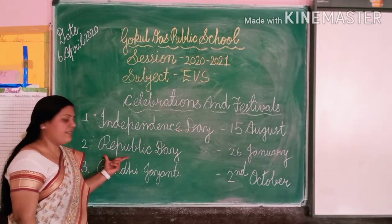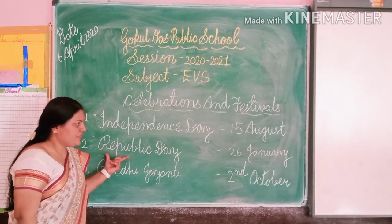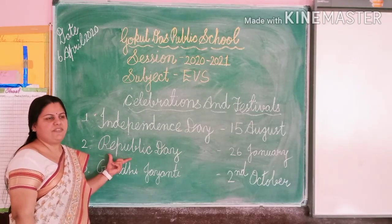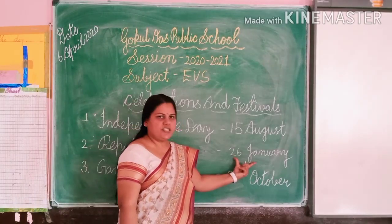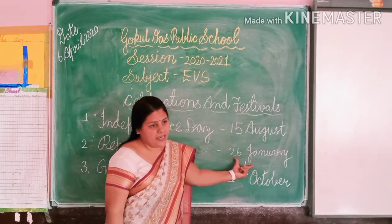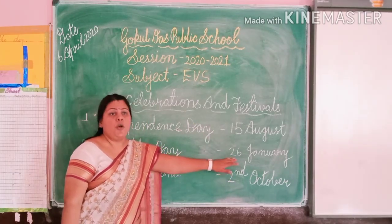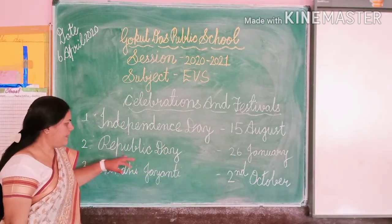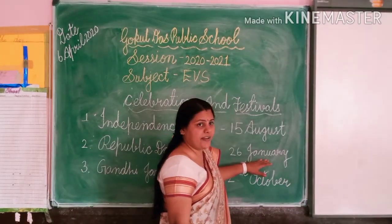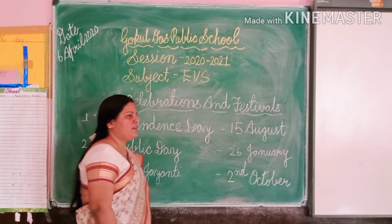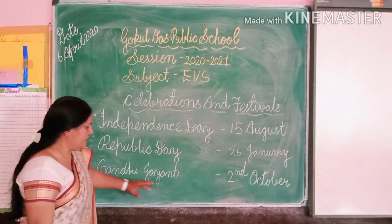The second national festival is Republic Day. We celebrate Republic Day on 26th January. Keep this date in your mind. Now the third — but not last — is Gandhi Jayanti.